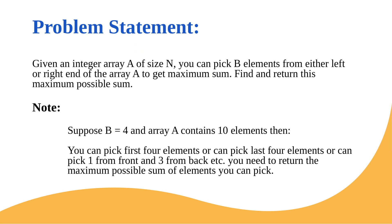To clarify: suppose B equals 4, meaning we have to pick 4 elements from an array containing 10 elements. We can pick the first 4 elements from the left, or the last 4 elements from the right end, or 1 from the front and 3 from the back, or 2 from the front and 2 from the back, and so on. We need to pick in a contiguous manner from either end — not, for example, the 1st, 3rd, and 5th elements.